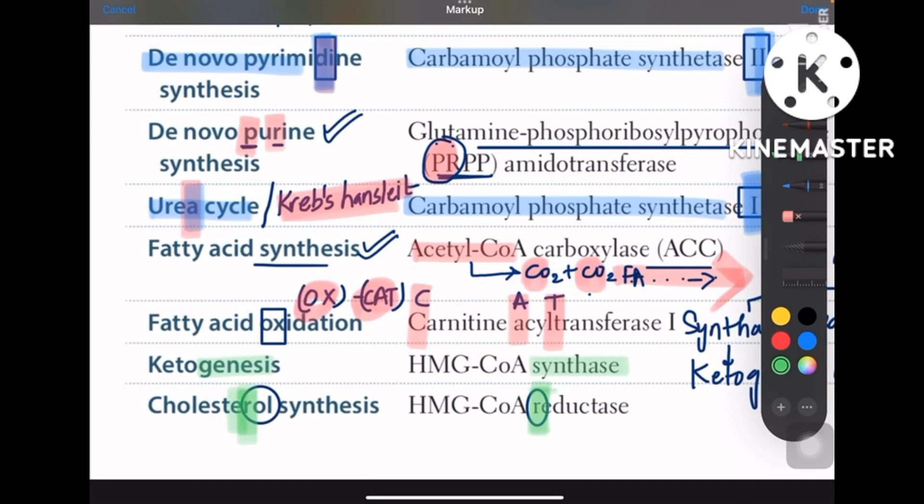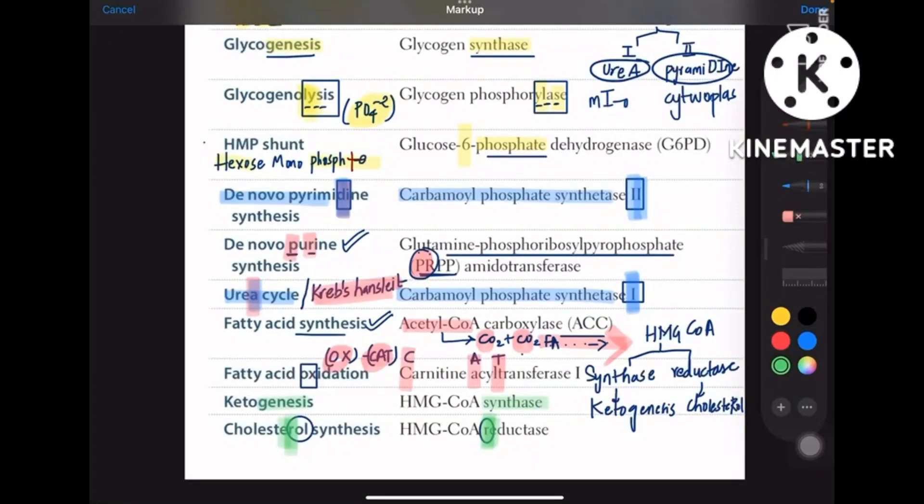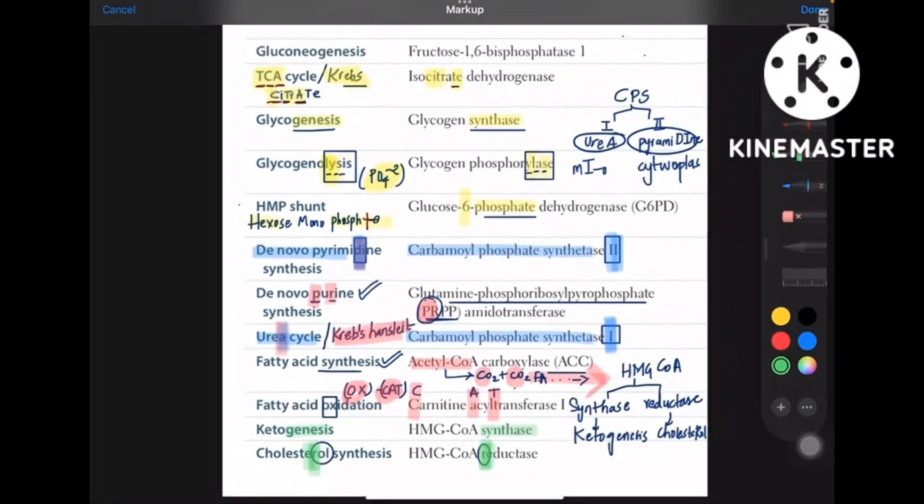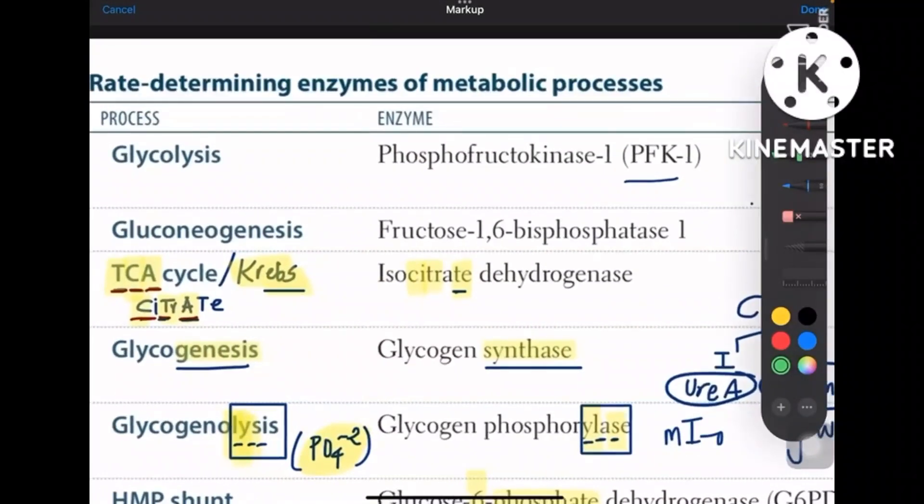So these are the enzymes which are most important and from the most important cycles of biochem. So guys, first two enzymes are glycolysis and gluconeogenesis, which are phosphofructokinase-1 and fructose-1,6-bisphosphatase as many of you know.